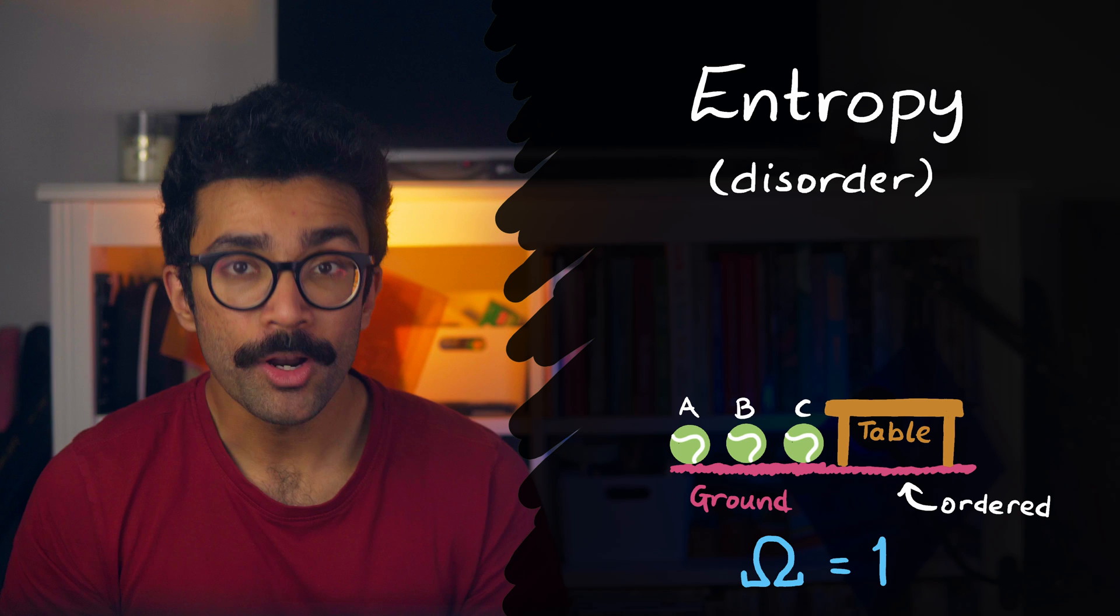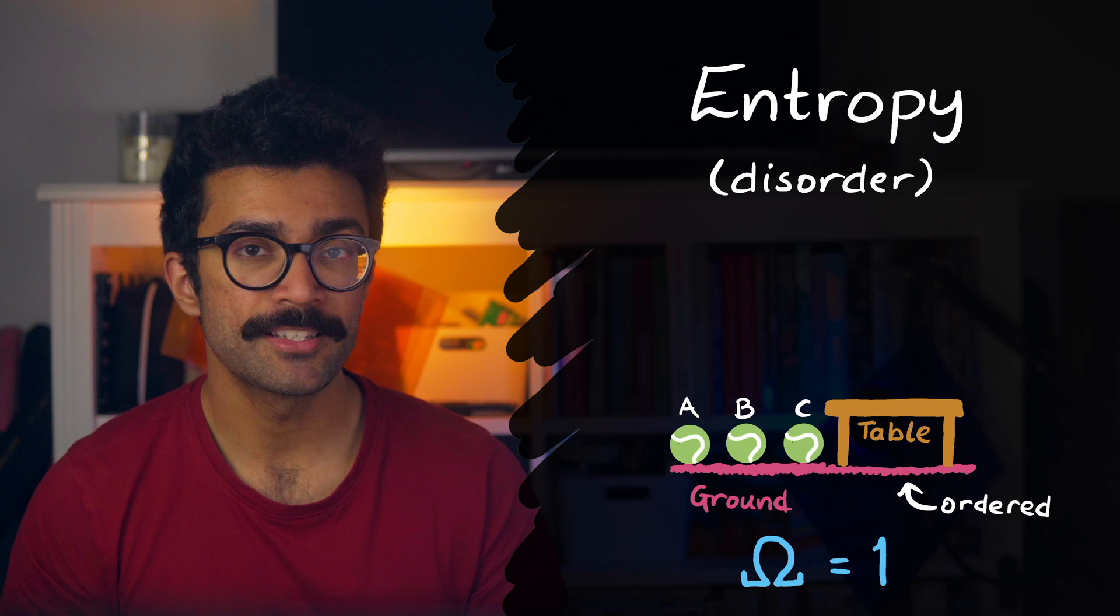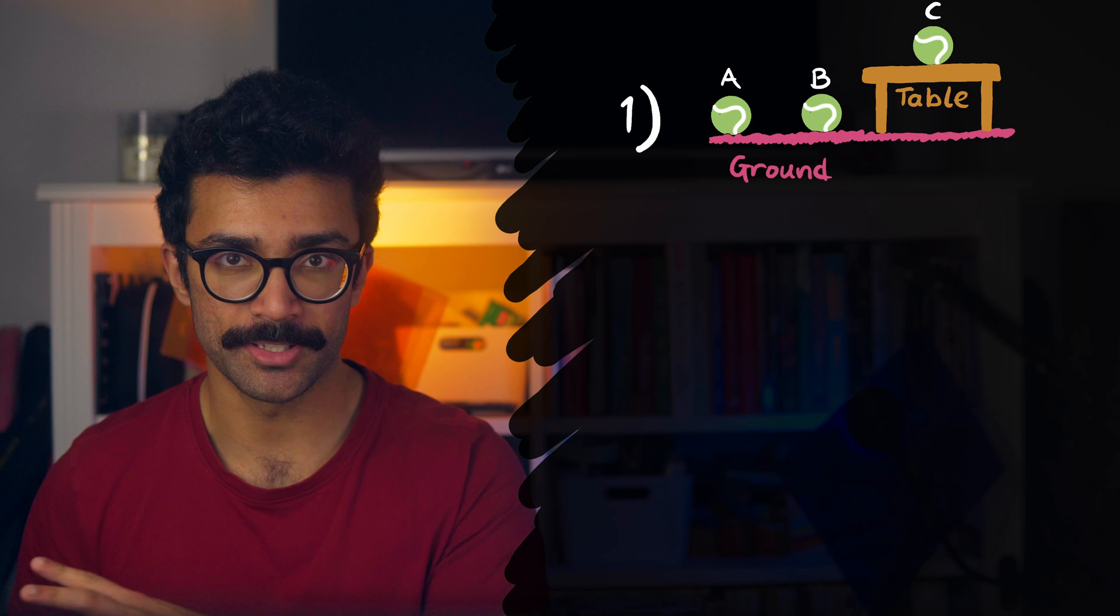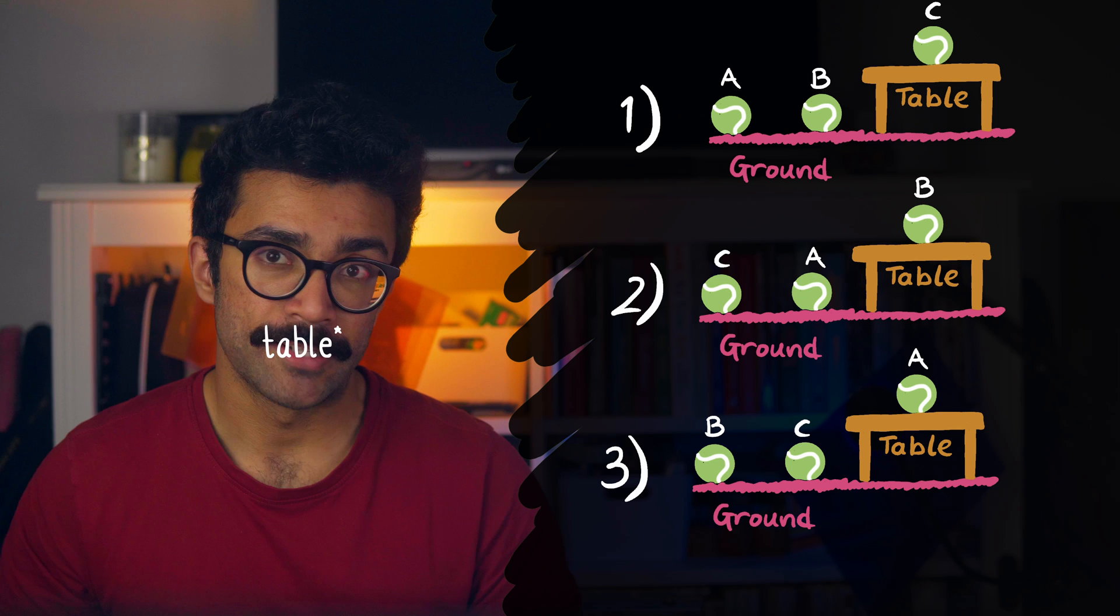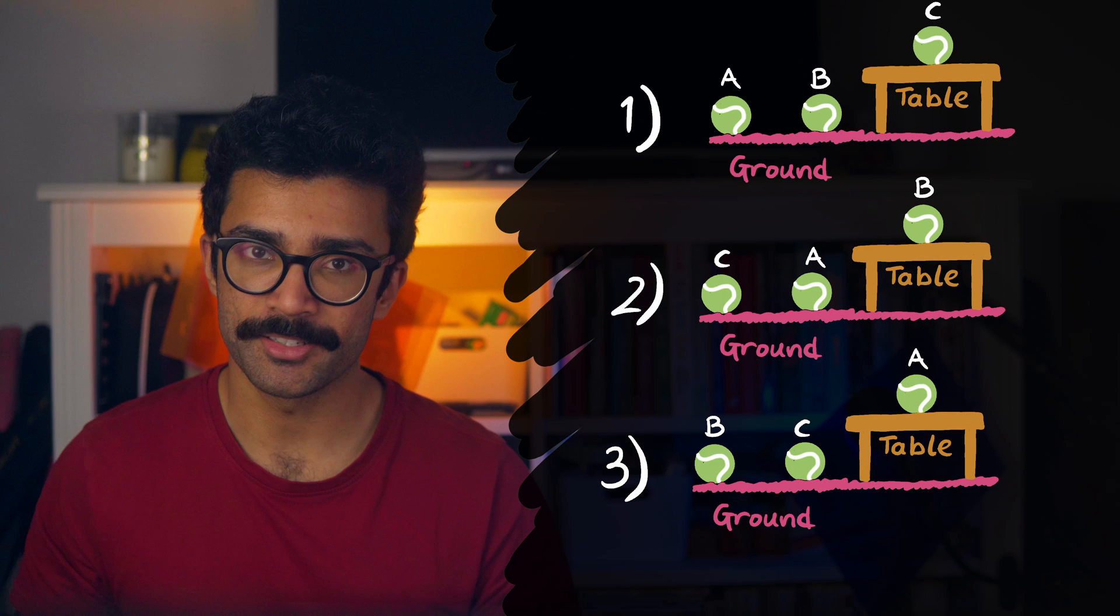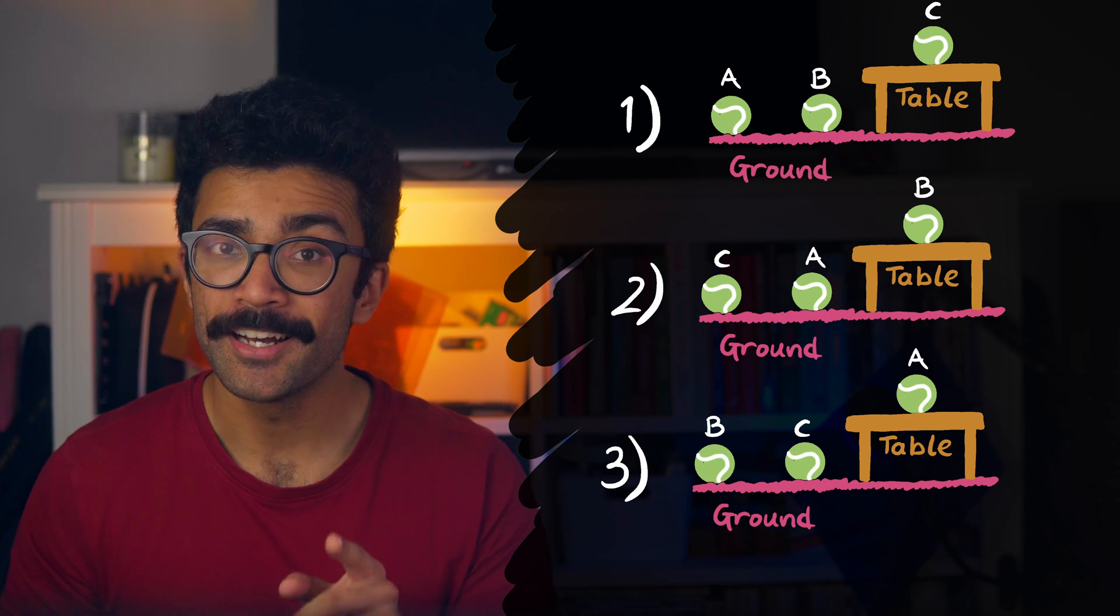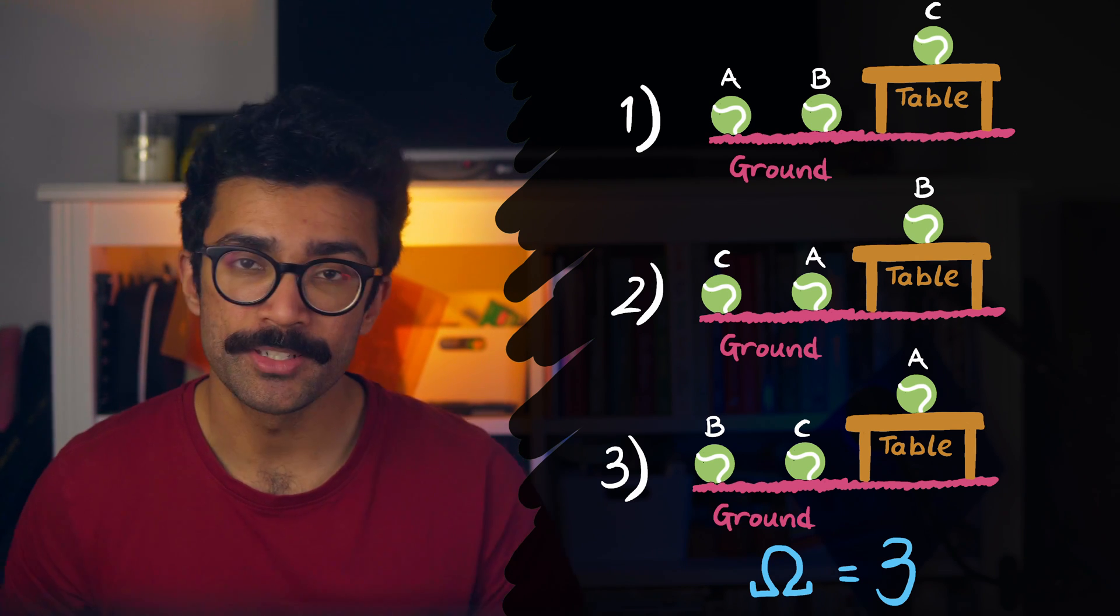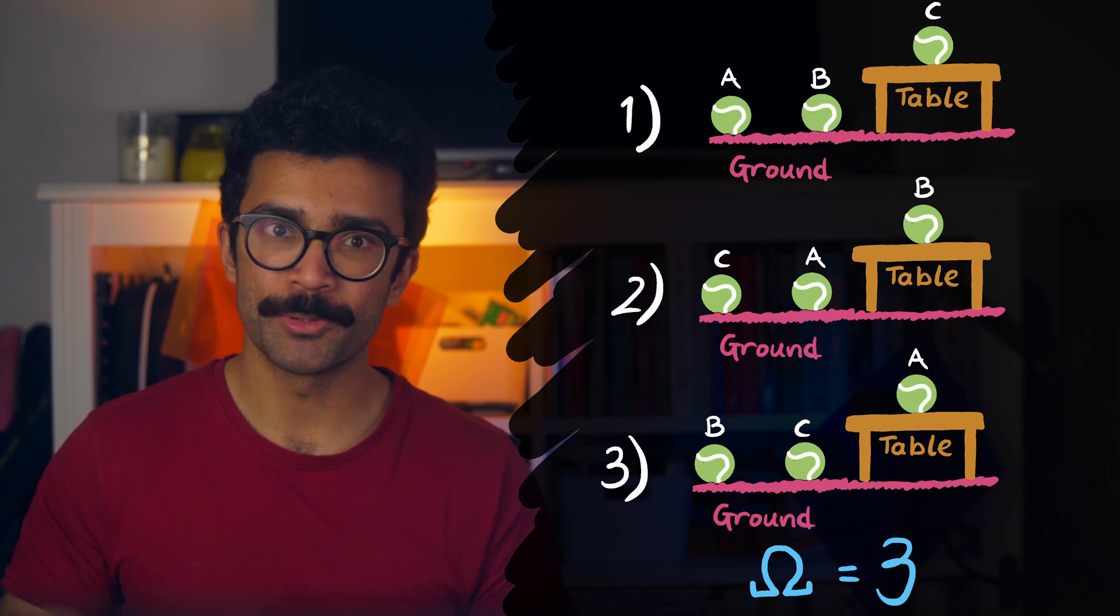Now, let's say we have a system where one of the balls can be on the table, while the other two must be on the ground. This time, we can arrange the system in slightly different ways. Either ball A and B are on the ground and C is on the table, or B is on the table and A and C are on the ground, or A is on the ground and B and C are on the table. In other words, there are three ways to arrange our system, such that one of the balls is on the table and two are on the ground. Here, omega is equal to 3. We would probably say that this is a more disordered system than the previous one, since that one was very neat, whereas this one has a stray ball ruining the neatness.